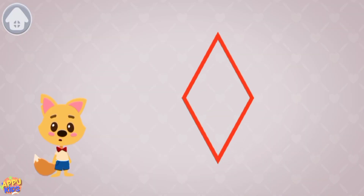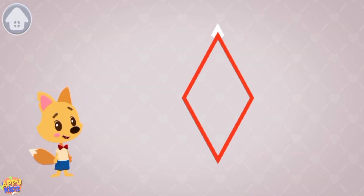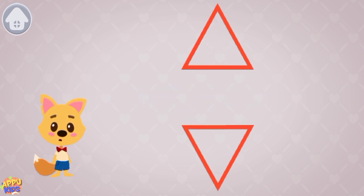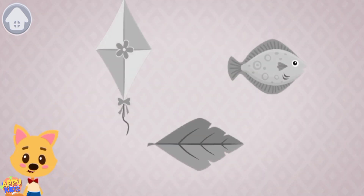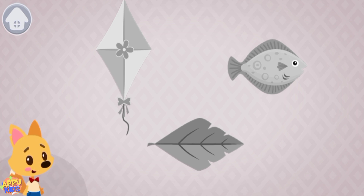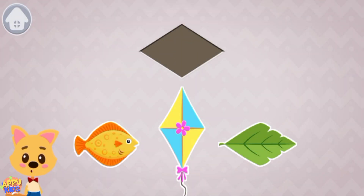This is a rhombus. It has four angles: one, two, three, four. A rhombus is made up of two triangles. All sides of the rhombus are equal. Tap on the rhombus. Tap on all the rhombus-shaped items: kite, fish, leaf. Drag the rhombus-shaped items into the window above.